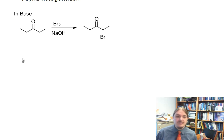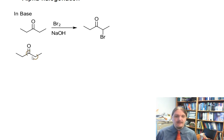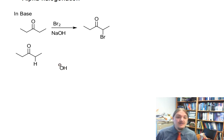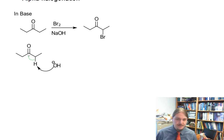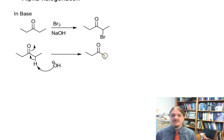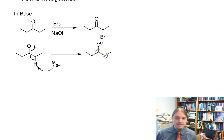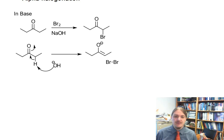Let's quickly go through the mechanism. This mechanism starts by deprotonating the alpha hydrogen to make the enolate, and then that reacts with bromine as an electrophile. The enolate is the nucleophilic carbon.